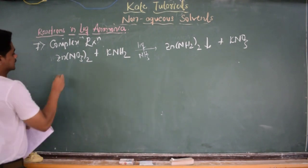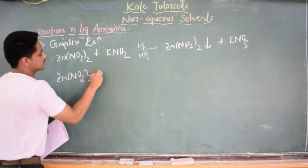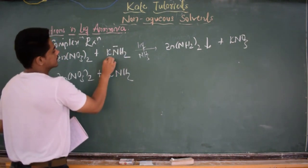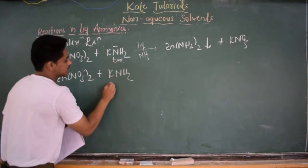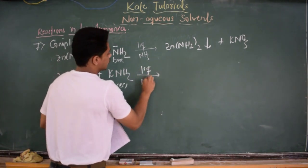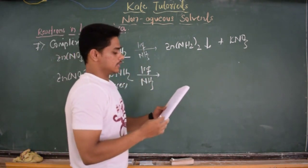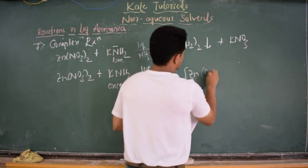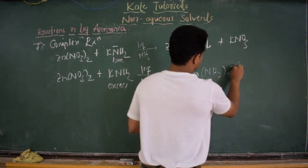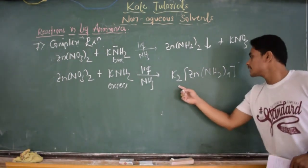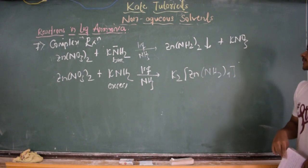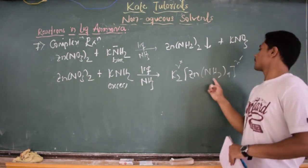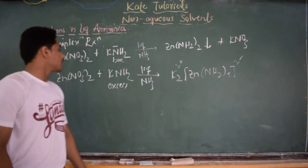If the same compound, zinc nitrate Zn(NO3)2, is treated with excess KNH2 — which acts as a base in liquid ammonia because of NH2− — in presence of liquid ammonia, then a complex compound is formed: K2[Zn(NH2)4]. This is potassium tetraamidozincate(II), a complex where zinc has 2+ and the complex ion has 2−. This is the complex reaction which occurs in liquid ammonia with excess KNH2.